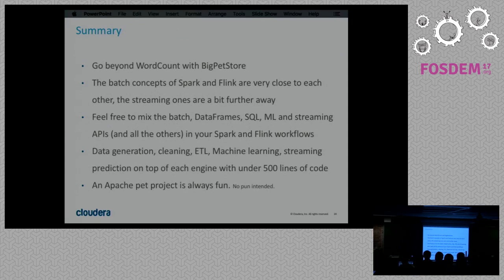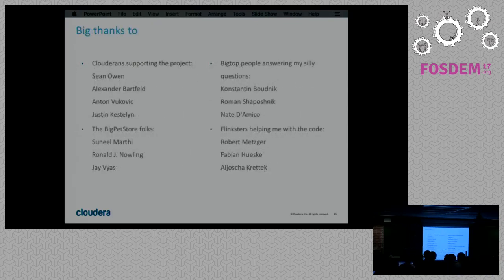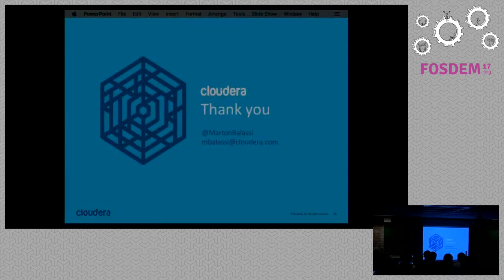As a summary: you should definitely go beyond word count with Big Pet Store. The batch concepts of Spark and Flink are very close, but they have differences in streaming. You have seen a lot of use cases with under 500 lines of code, it's available on GitHub, and you're very welcome to check it out. An Apache pad project is always fun. Big thanks to the guys who helped accomplish the project itself, and thank you very much for listening.